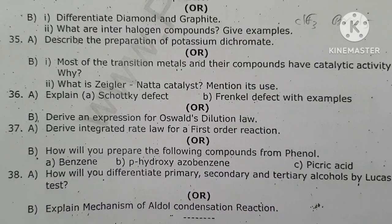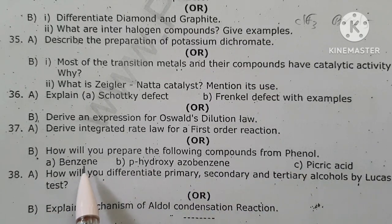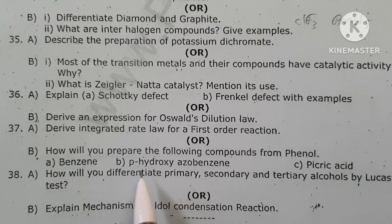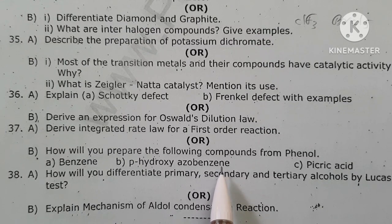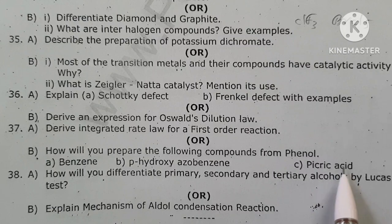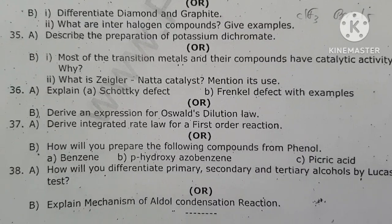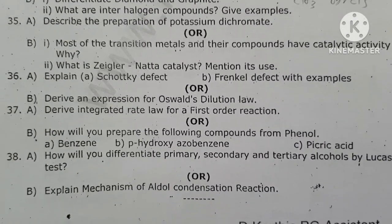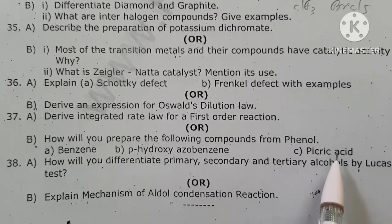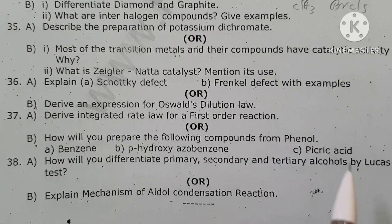How will you prepare the following compounds from phenol? Benzene: phenol treated with zinc dust gives benzene. Para-hydroxyazobenzene: phenol undergoes a coupling reaction with benzene diazonium salt at 273–278 K. Picric acid (2,4,6-trinitrophenol): phenol treated with concentrated nitric acid and concentrated sulfuric acid at 298 K.